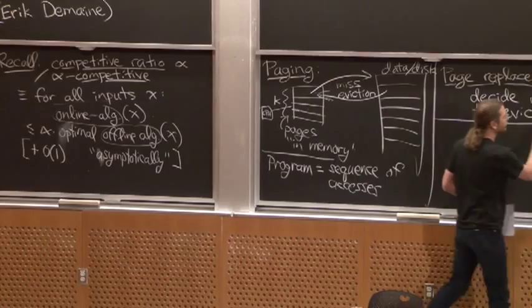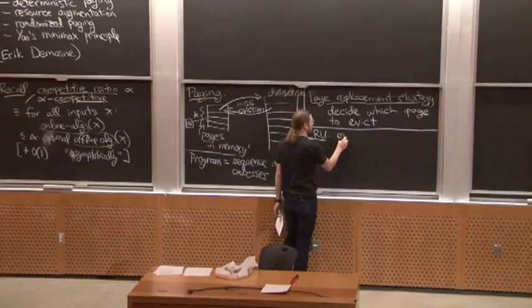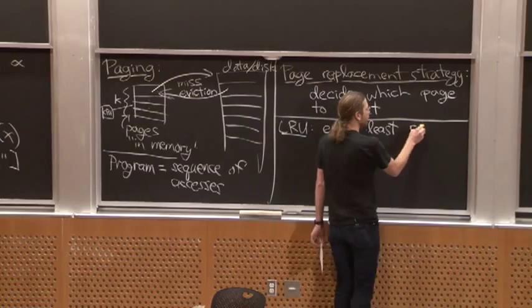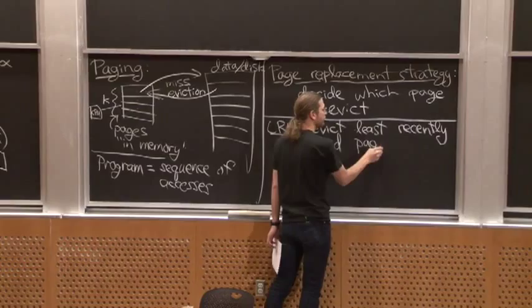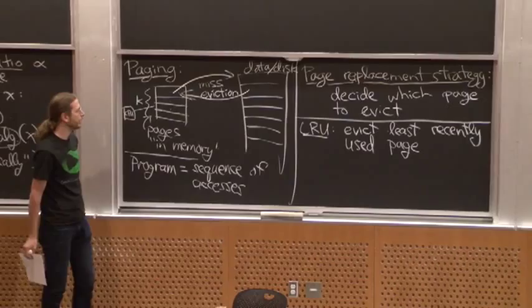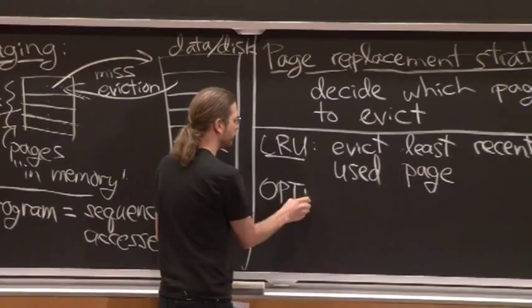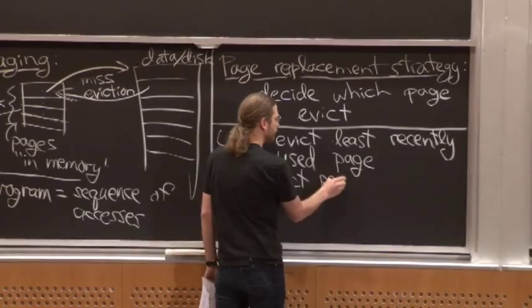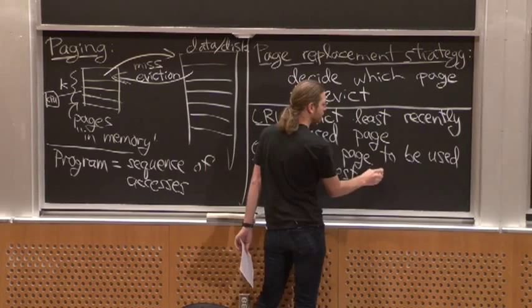Some obvious algorithms: LRU — least recently used — evicts whatever was least recently used. That's a nice algorithm because it only requires information about the past; you just store a timestamp for each page for the last time it was used. The offline optimal algorithm, which you can prove is evicting the page to be used farthest in the future — it's essentially a greedy algorithm where you look into the future and see which cached page will be needed last.